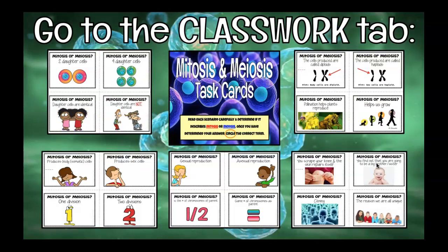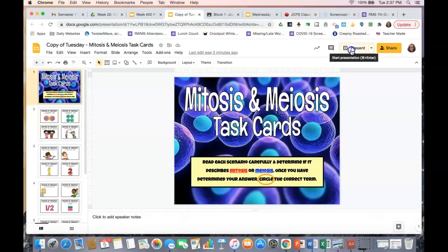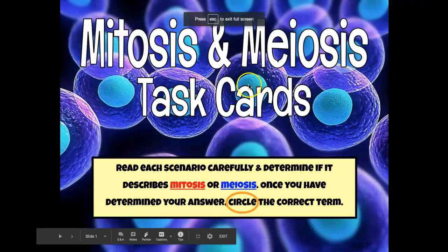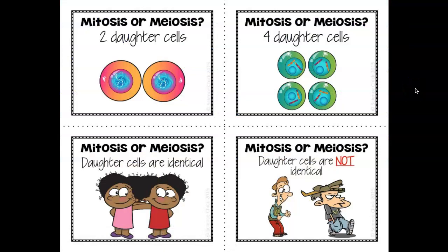Under the Classwork tab, you will find the mitosis and meiosis task cards. Each one has a scenario or description on it, and you have to figure out if it's describing mitosis or meiosis, then circle which one you think is correct. I'm going to switch tabs to my copy of the task cards so you guys can see. This is exactly what it looks like — the first page was your title slide, and now this starts the task cards.